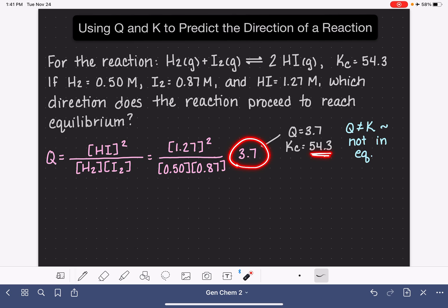3.7 is too small. We know in this case we have a Q that is less than K, whether it's a Kc, a Kp, a K, whatever. We have a Q that is less than K. This number is too small.